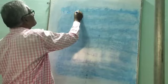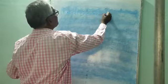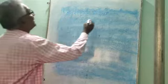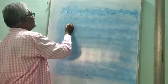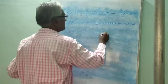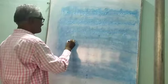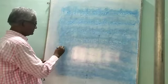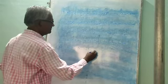Monohybrid cross: Mendel selected tall plants and dwarf plants for monohybrid cross. When a cross occurs between one pair of contrasting characters, it is called a monohybrid cross.